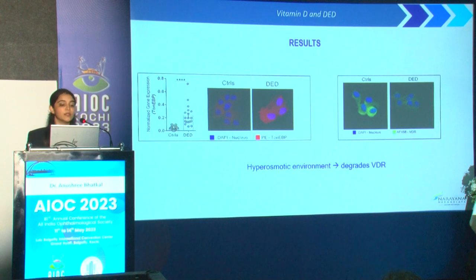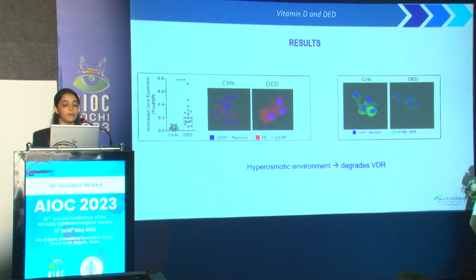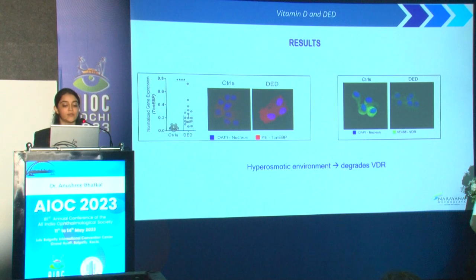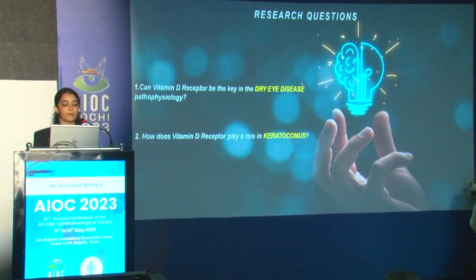In dry eye disease patients, we observed increased expression of TonEBP and decreased expression of vitamin D receptors in the epithelial cells. We could therefore say that the hyperosmotic environment was degrading the vitamin D receptors.